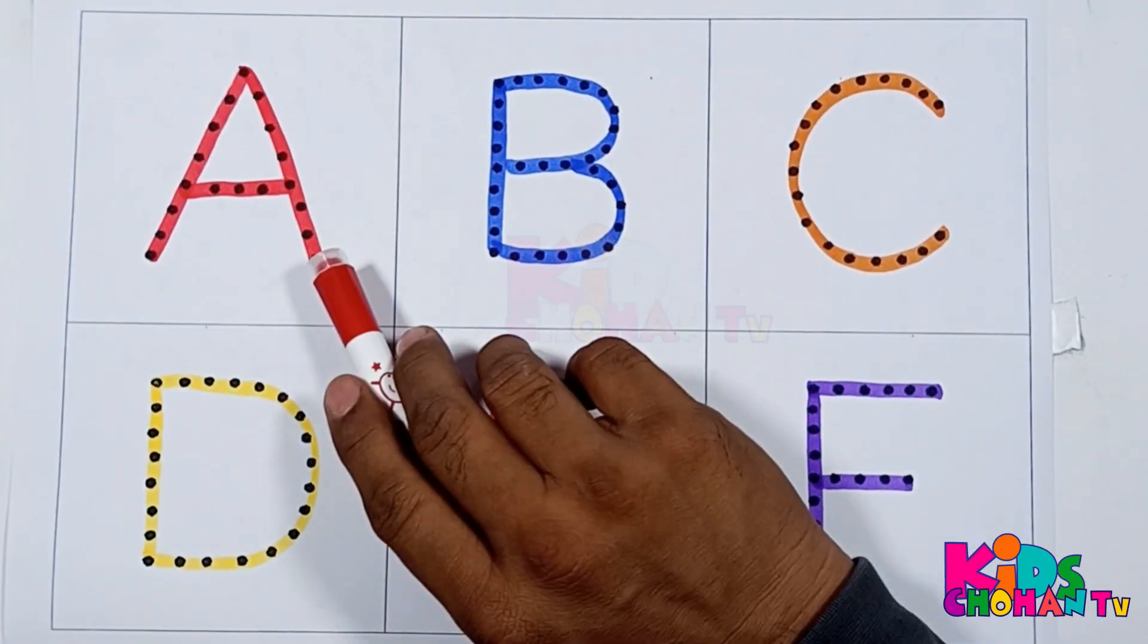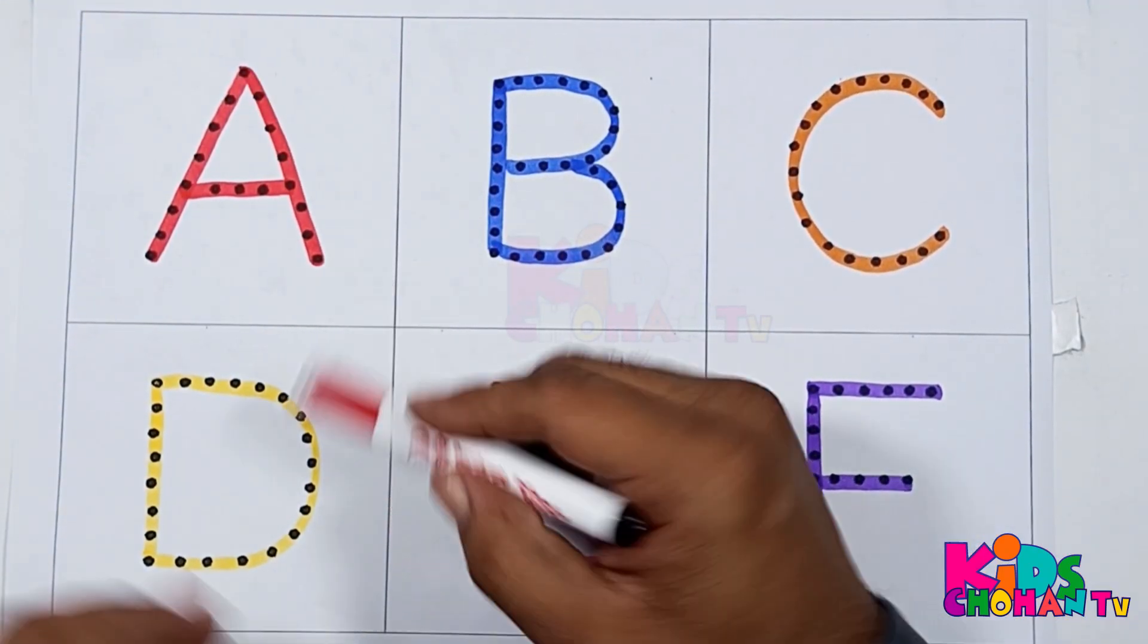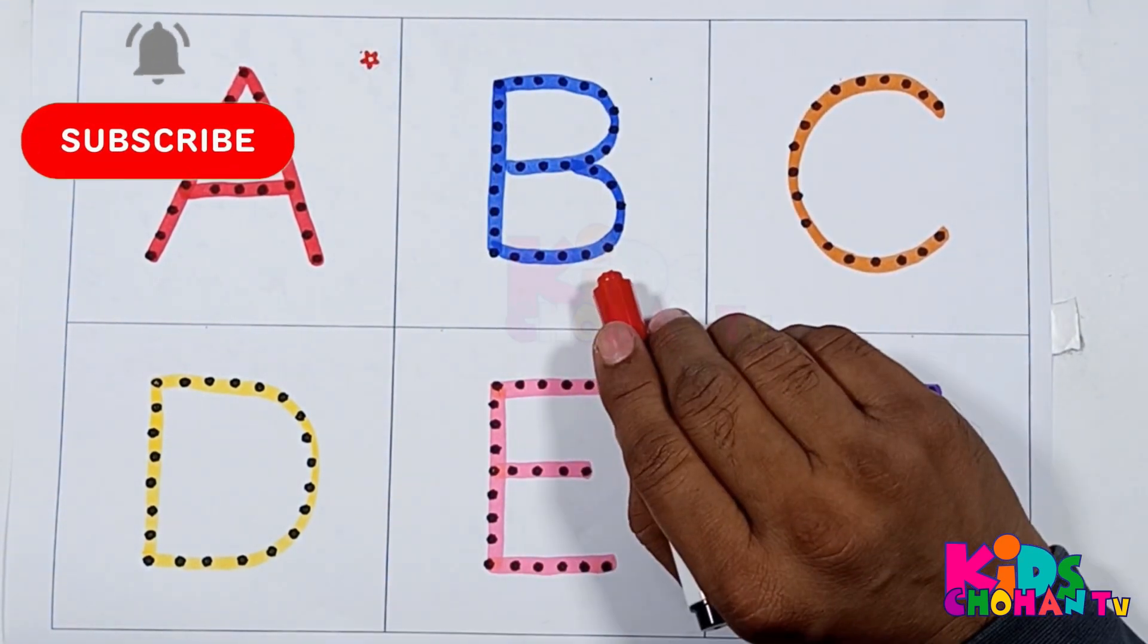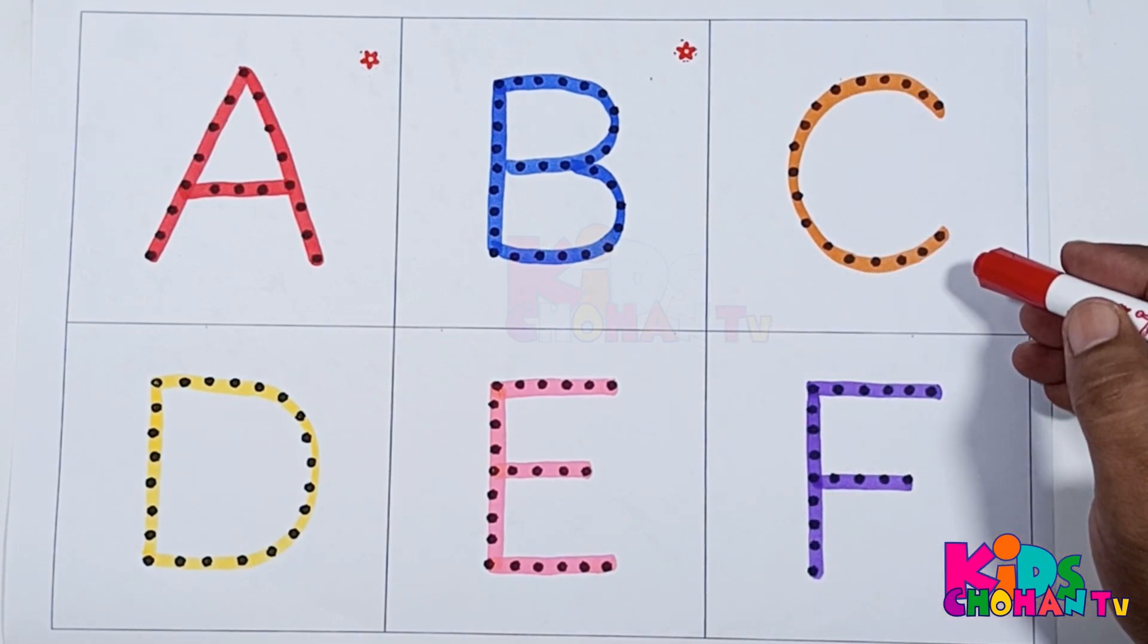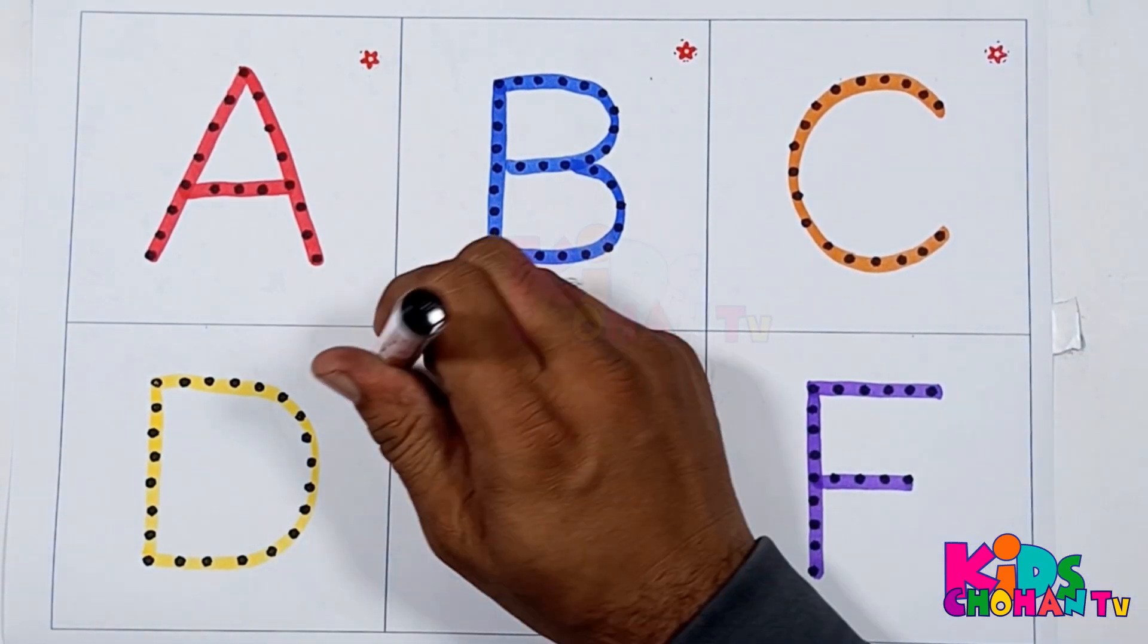Kids, read again. A for apple, B for bat, C for cat, D for duck, E for elephant, F for fish.